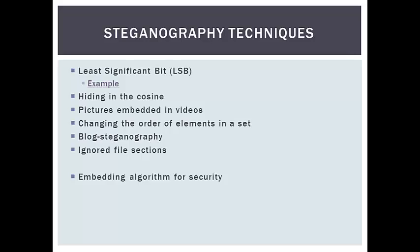Another technique is embedded pictures and videos. These images are unnoticeable unless the video is slowed down and looked at frame by frame. The person receiving the video would know exactly what time frame to stop it at to view the image. This is not one of the most secure ways of transmitting the image, but it is simple. Other methods include changing the order of elements in a set, blog steganography, and ignored file sections. Blog steganography is when someone hides an image on their blog or social networking site; the message can be found in the comments or in an image on the website. Messages can also be put in the ignored file sections of a document.